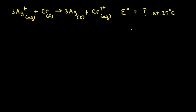Let's do a worked example where we calculate the standard potential at 25 degrees Celsius for this reaction. In this redox reaction, silver cations are reduced to form solid silver, and solid chromium is oxidized to form the Cr³⁺ ion.